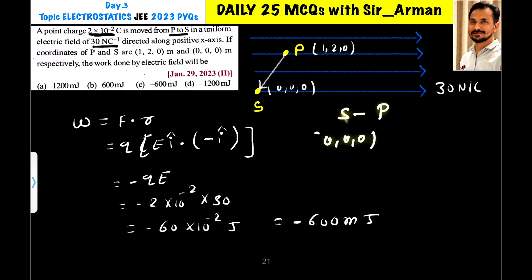So S is 0, 0, 0 minus P which is 1, 2, 0. So here it is 0 minus 1 is minus 1, 0 minus 2 is minus 2, 0 minus 0 is 0. So this is the displacement done.